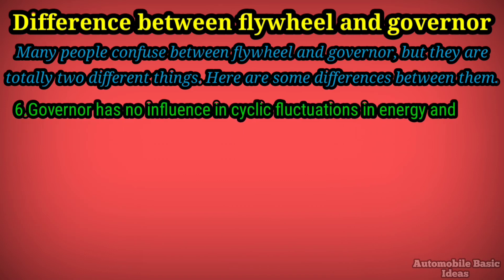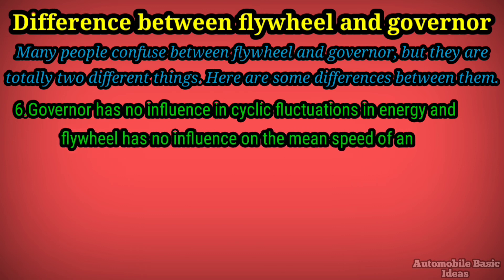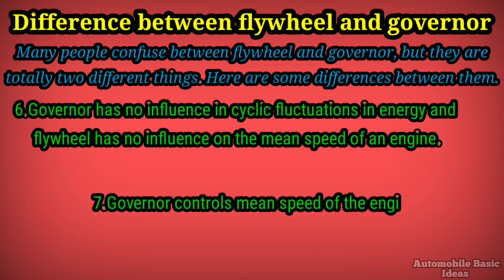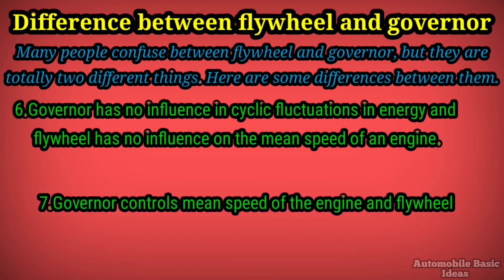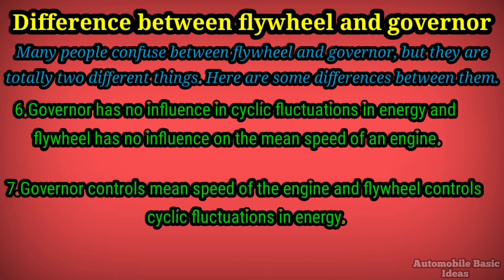Six: the governor has no influence on cyclic fluctuations in energy, and the flywheel has no influence on the mean speed of an engine. Seven: the governor controls the mean speed of the engine, and the flywheel controls cyclic fluctuations in energy.